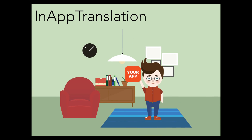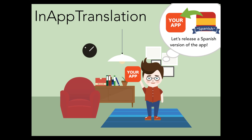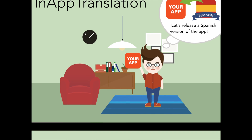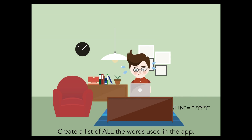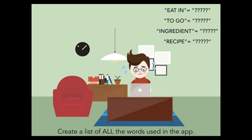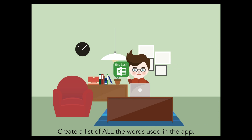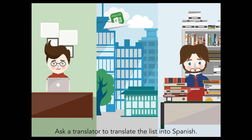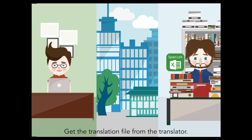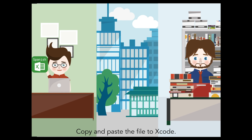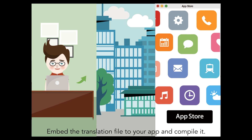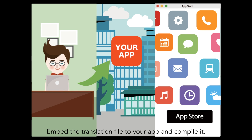Say you were an iOS developer and wanted to localize your app into Spanish. In order to do so, you first need to create a list of all the words and phrases used in your app. Then, ask a translator to translate the list of words and phrases into Spanish. Once translation is done, copy and paste the translation file to your Xcode project, embed the translation file to your app, and compile it.